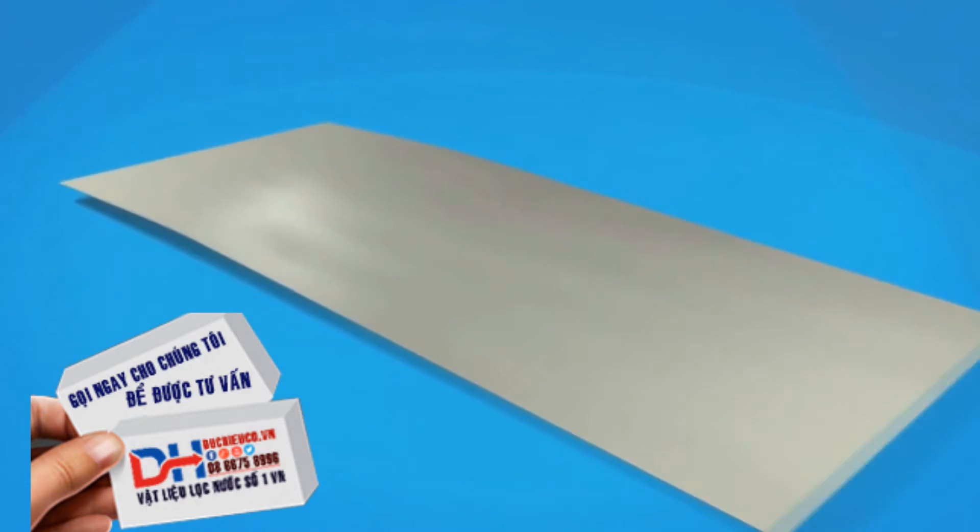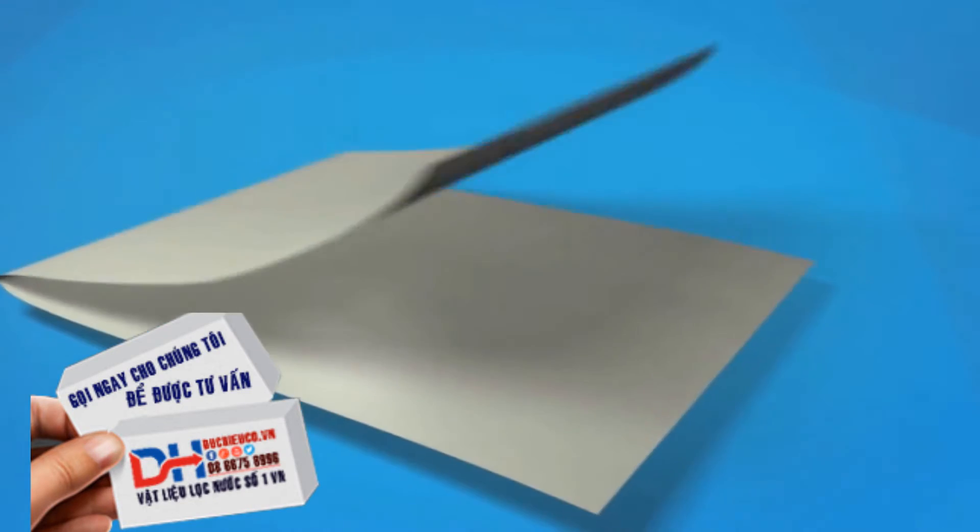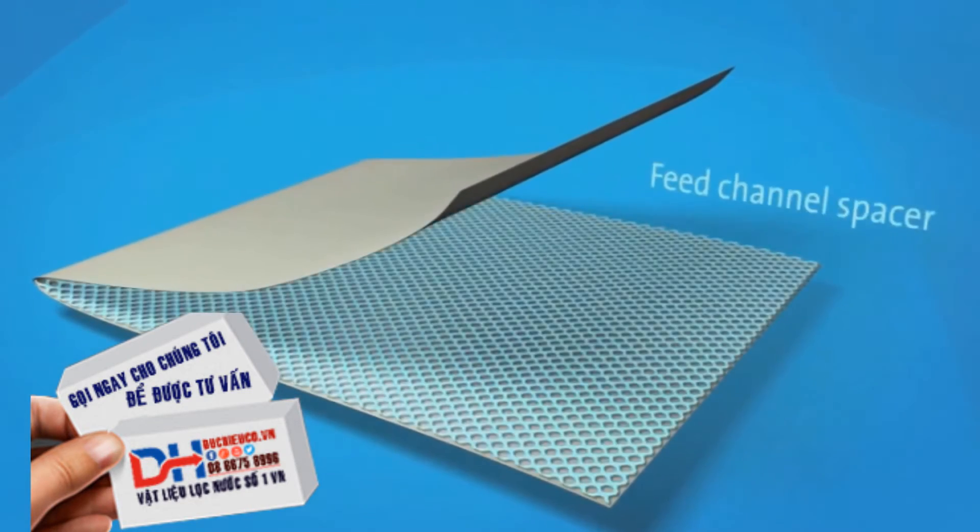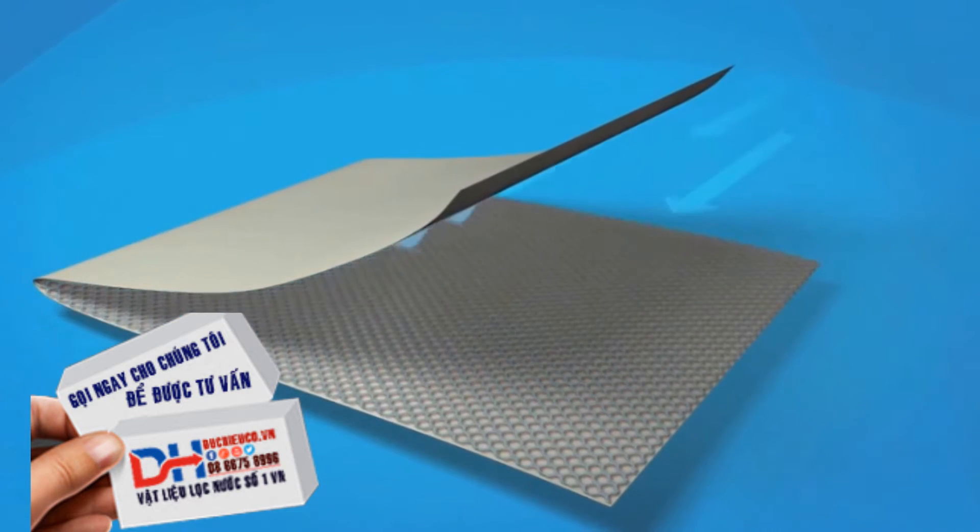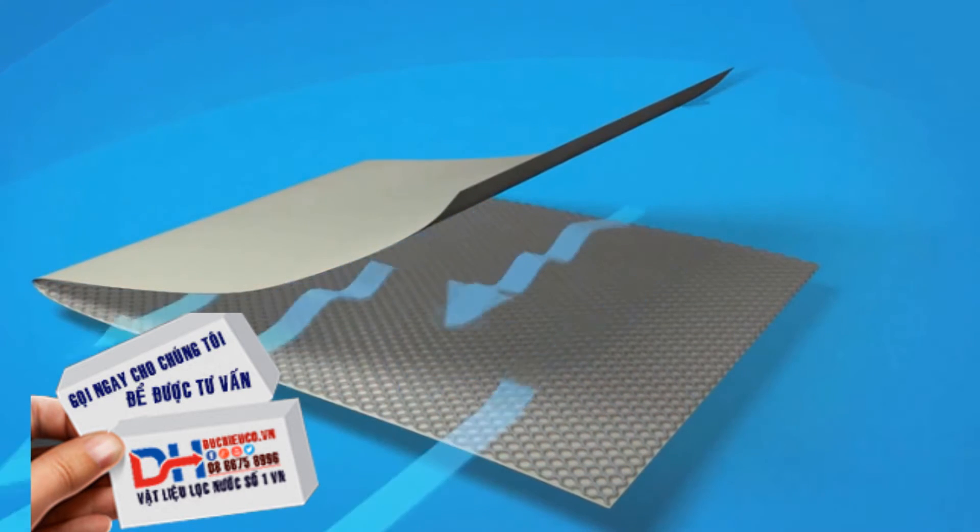The membrane flat sheet is combined with a sheet of feed channel spacer. This provides turbulence and creates space between the membrane sheets for the feed water.